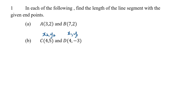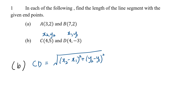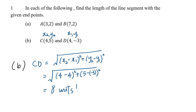Now let's look at Part B. Do not neglect the step of labeling the points. Label point C as (x2, y2) and point D as (x1, y1). Write down the formula and substitute: x2 = 4, x1 = 4, y2 = 5, y1 = −3. Use a calculator to evaluate — the answer is 8 units.